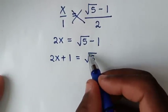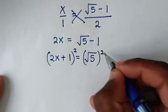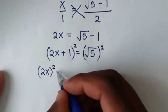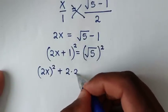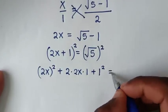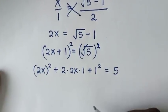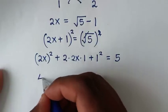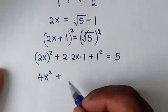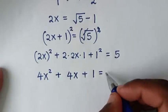To remove the square root, we square both sides. Expanding (2x + 1)² gives 4x squared, plus 2 times 2x times 1 which is 4x, plus 1 squared which is 1, equals 5. So we have 4x² + 4x + 1 = 5.